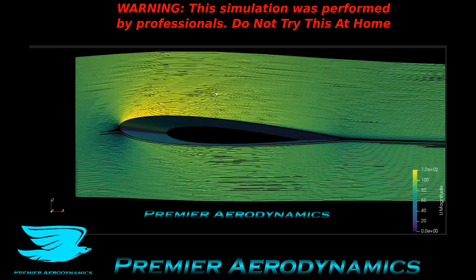These are streamlines colored by velocity from 0 to 120 meters per second. The free stream velocity is 90 meters per second, and over the airfoil it increases dramatically to well above 120 meters per second; underneath it stays quite low. You can see that behind the trailing edge the streamlines go down a little bit at an angle, and that's a dead giveaway that this airfoil is now producing lift.